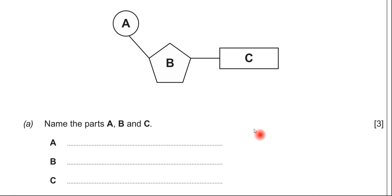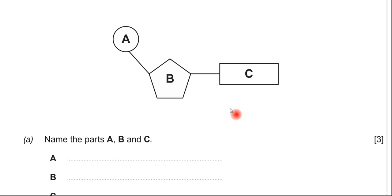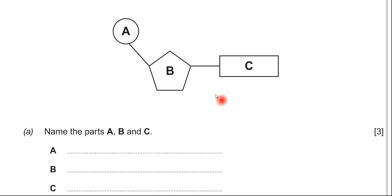This is a cartoon diagram of a nucleotide using basic shapes to represent the three molecules that make it up. A circle always represents the phosphate group, so A is a phosphate. B represents the sugar. Since the question specifies it's a component of DNA, just saying 'sugar' wouldn't get you the mark — you'd have to say it's the deoxyribose sugar.